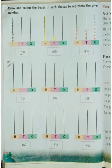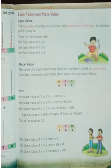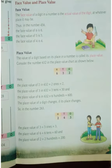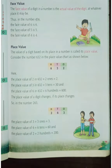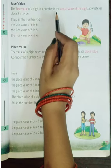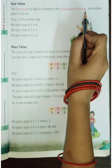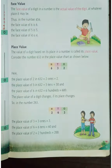Now page number 35. Face value. The face value of a digit in a number is actual value of the digit at whatever place it may be. Face value, digit ka, it won't change.